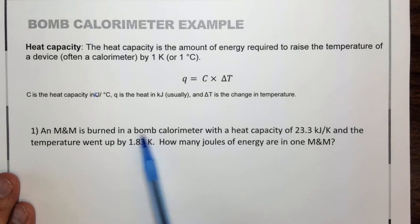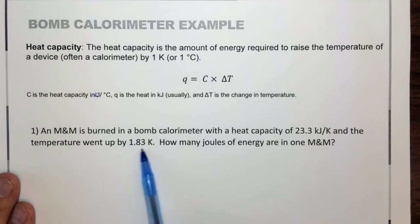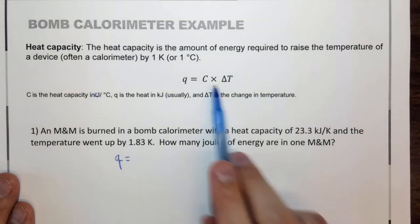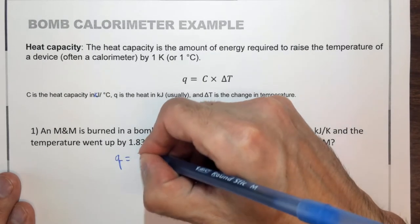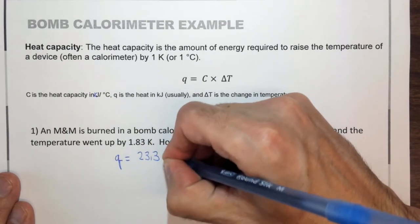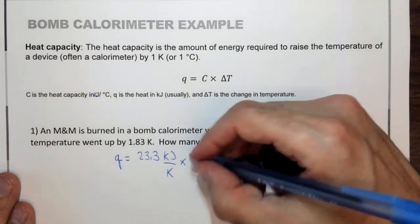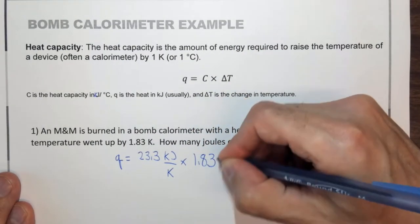It says an M&M is burned in a bomb calorimeter with a heat capacity of 23.3 kilojoules per K, and the temperature went up by 1.83 K. How many joules of energy are in the M&M? So here Q equals C, the heat capacity, 23.3 kilojoules per K, times the change in temperature, 1.83 K.